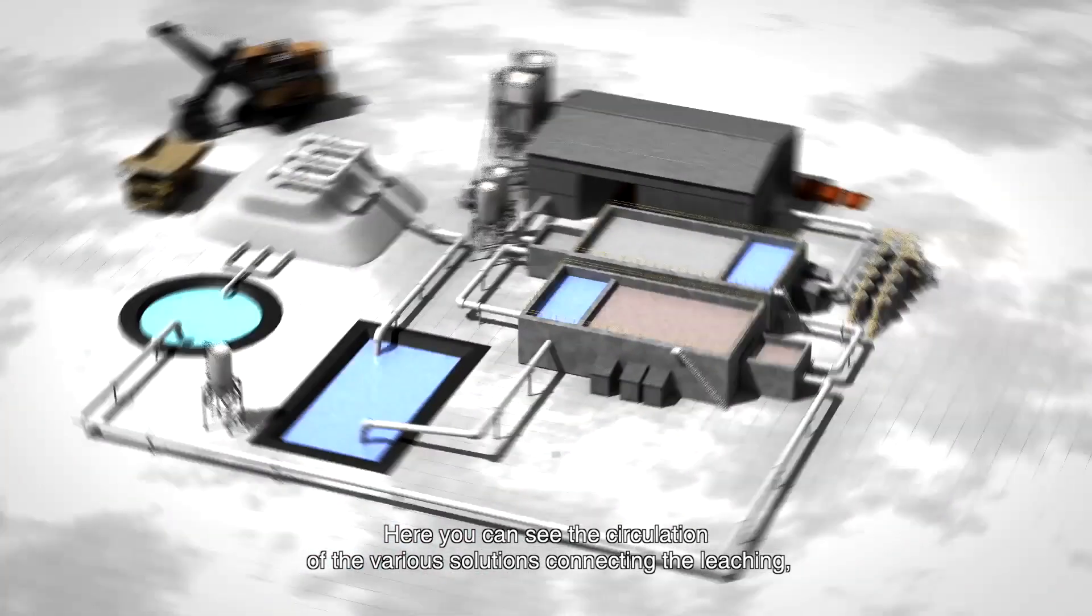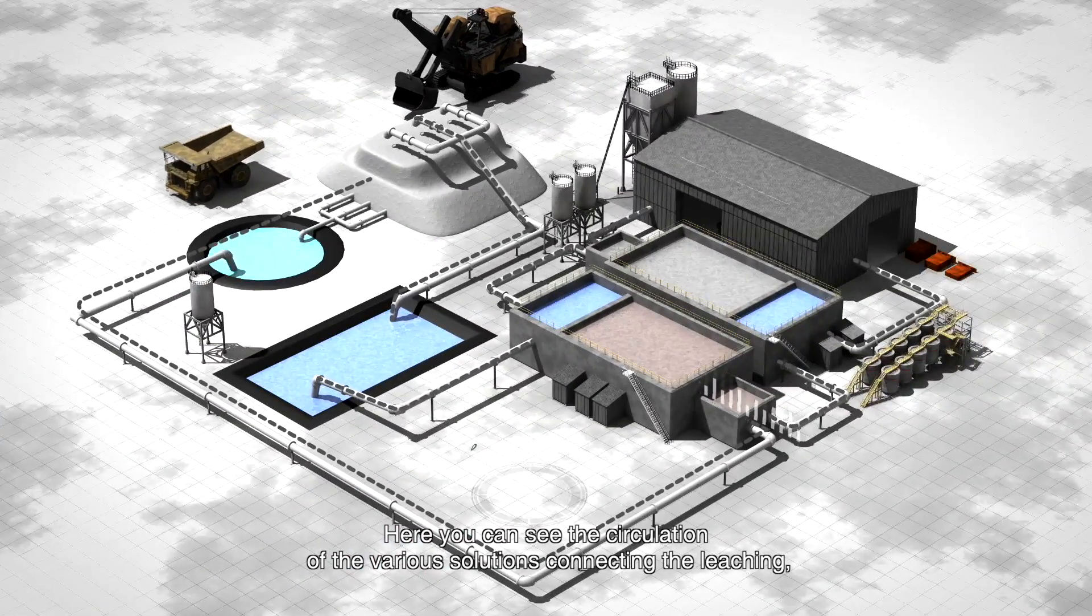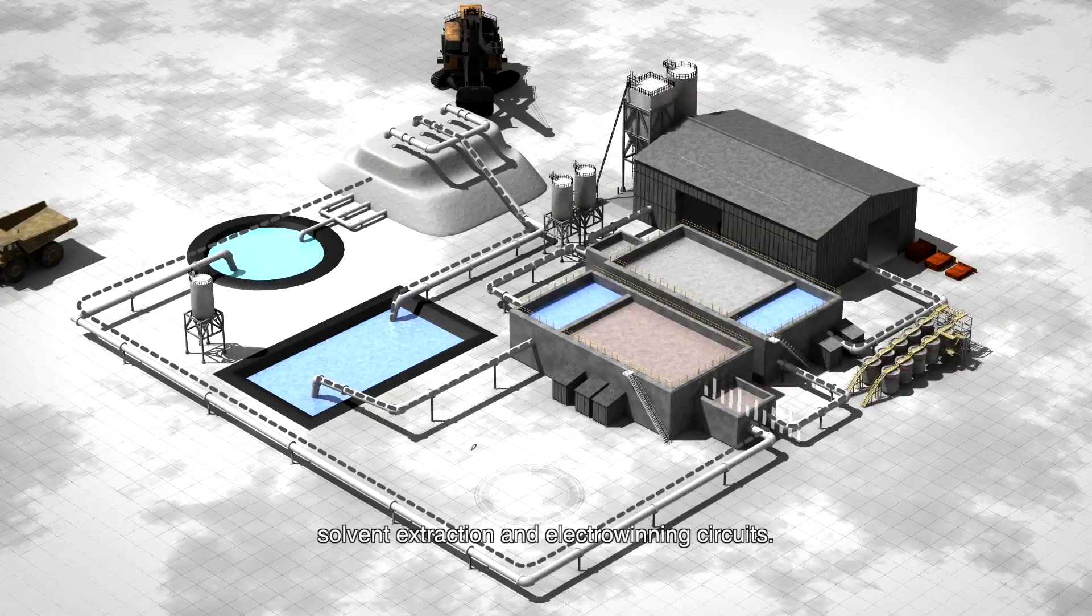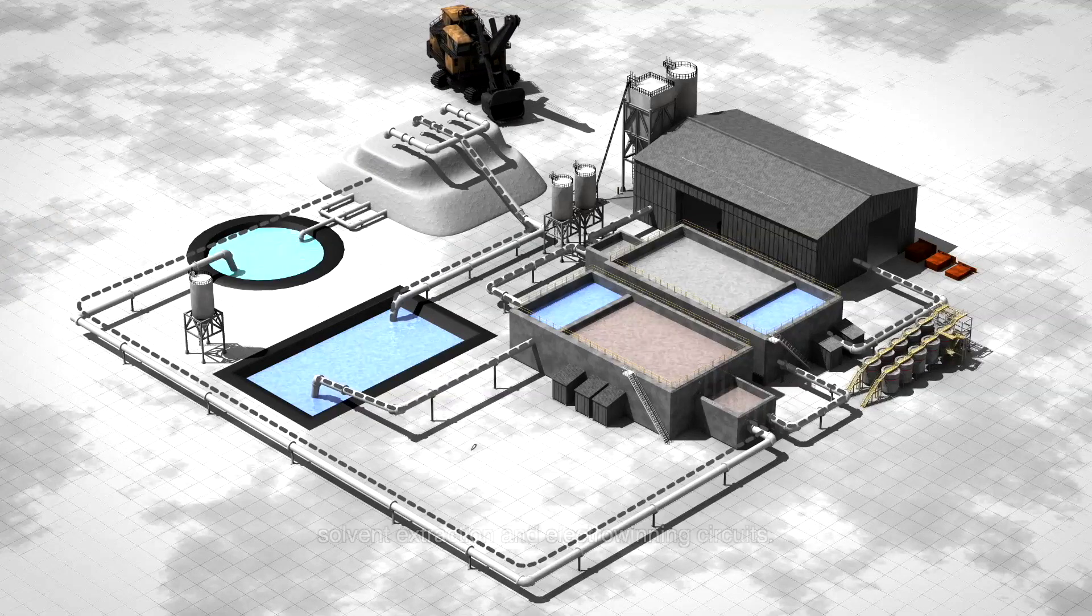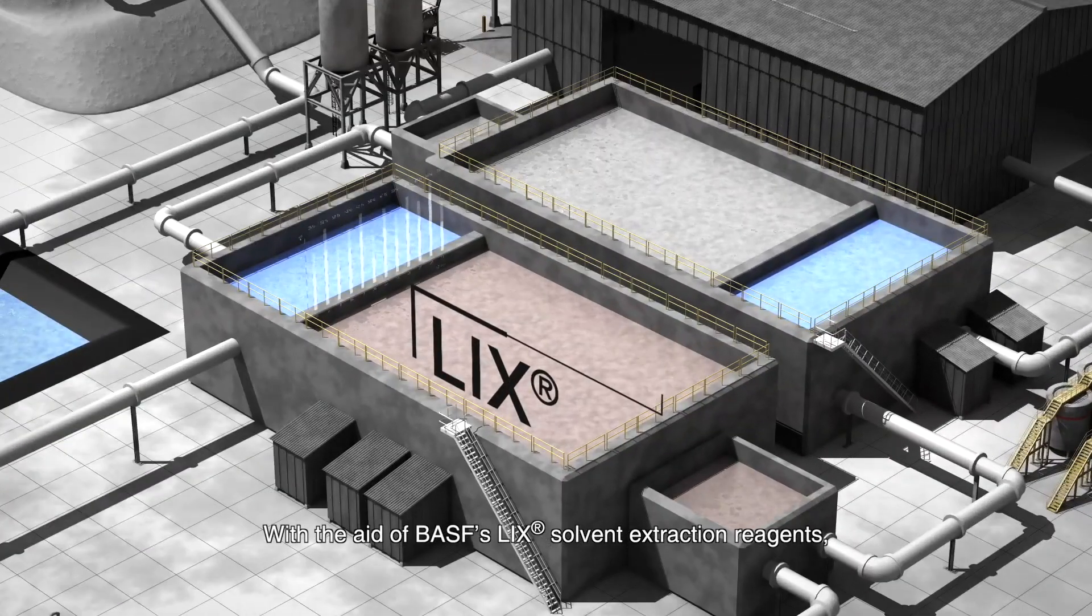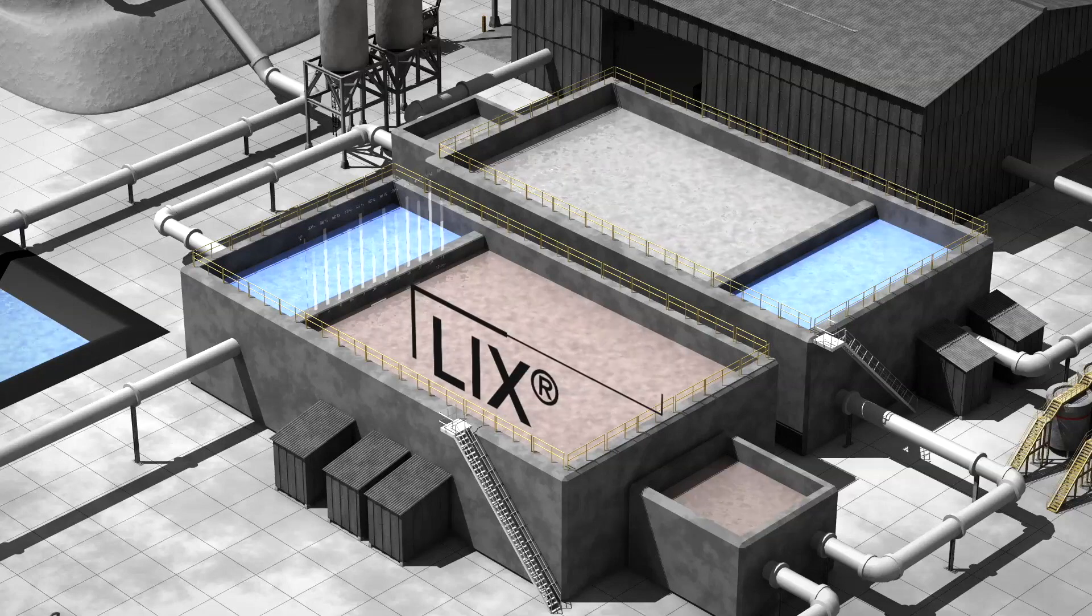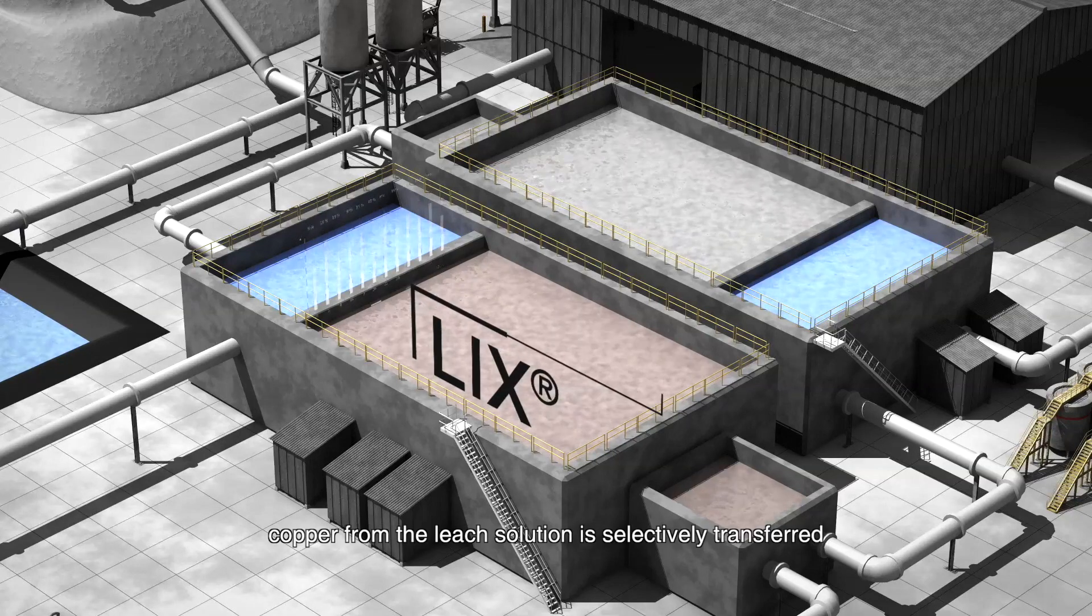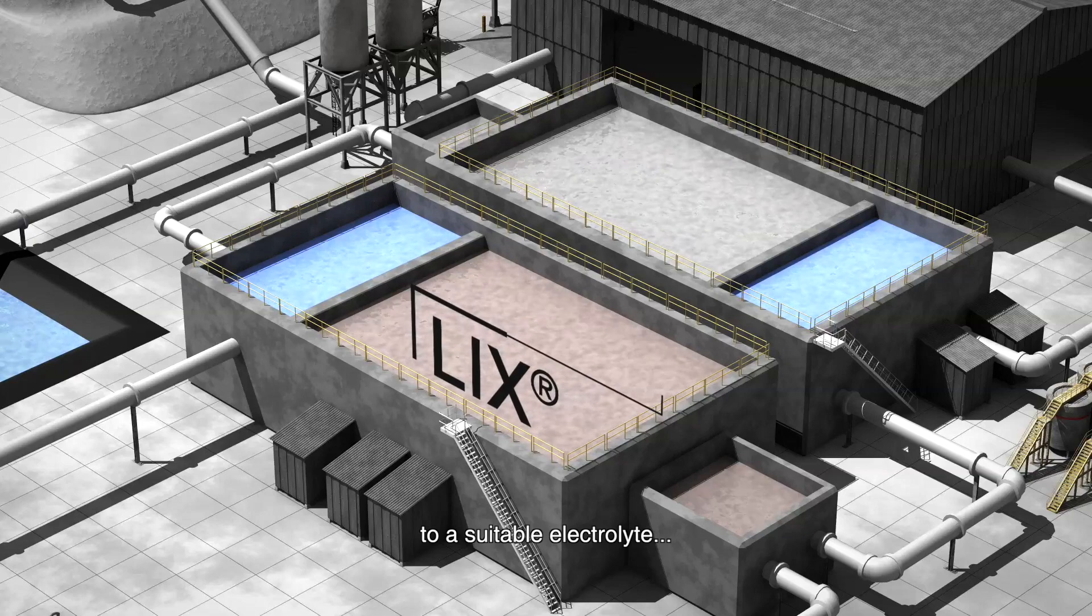Here you can see the circulation of the various solutions connecting the leaching, solvent extraction and electrowinning circuits. With the aid of BASF's lixtra, copper from the leached solution is selectively transferred to a suitable electrolyte.